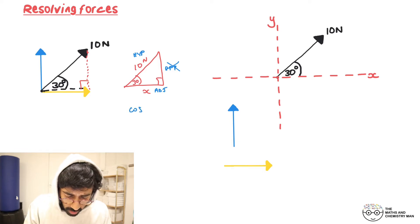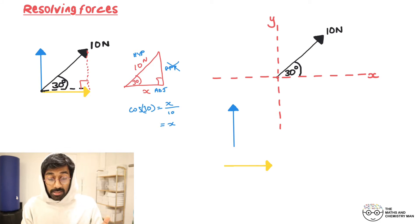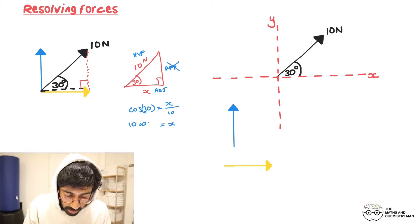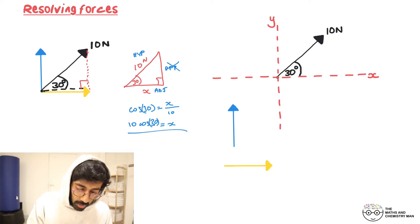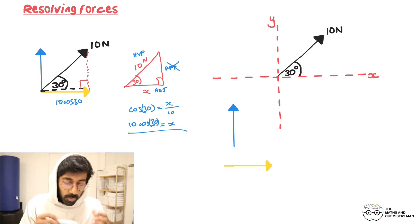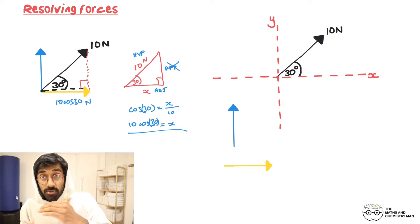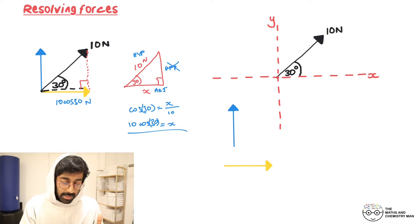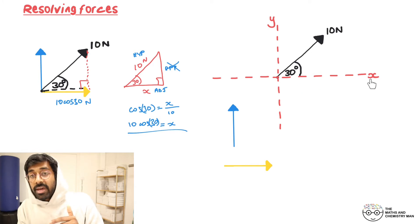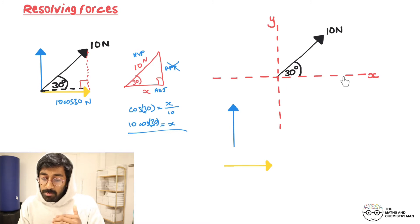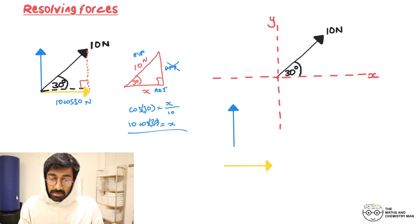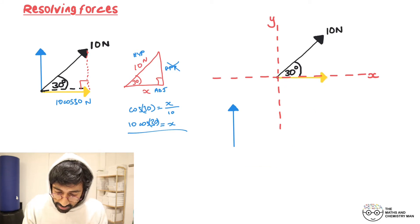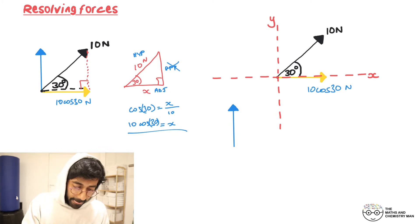We're going to use cosine here. cos 30 equals adjacent over hypotenuse, which is 10. So to find x, the component in the x direction, x = 10 cos 30. The yellow arrow is moving 10 cos 30 to the right. Because it's pointing in the positive x direction, we give it a positive sign: 10 cos 30 newtons.